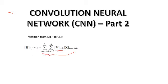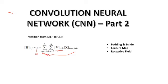In this particular lecture, we will be learning about padding, stride, feature map, and receptive field. For this lecture, we are considering the value of bias as 0 for ease of calculation. I'll show you how this cross-correlation actually happens, and based on this, padding, stride, feature map, and receptive fields will also be explained.